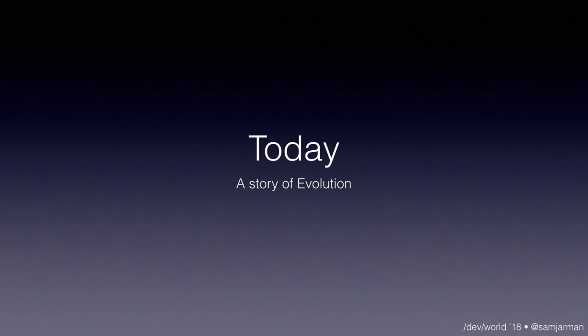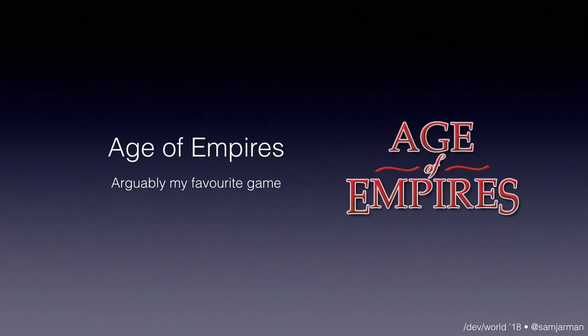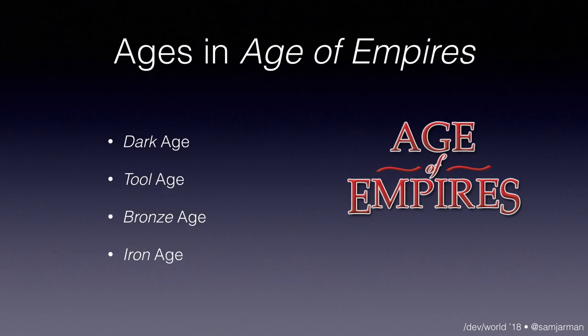So today I want to talk about a story of evolution. The iOS community has gone through some phases of evolution and I want to frame it in the sense of my favourite game. I really like Age of Empires, even though it's made by Microsoft. In Age of Empires, we had this notion of ages, loosely based on the Paleolithic ages we know in history. In Age of Empires 1, there was the Dark Age, the Toll Age, the Bronze Age, and then the Iron Age. So I want to talk about the Dark Age first — the Dark Age of iOS programming.